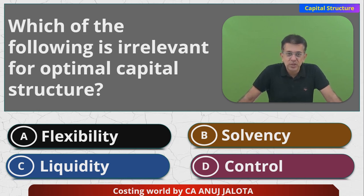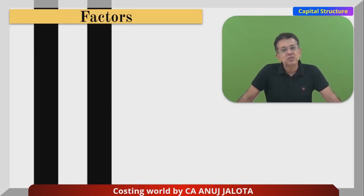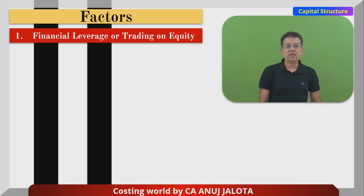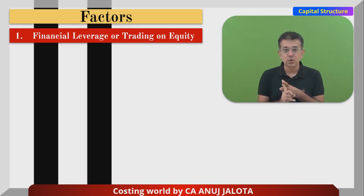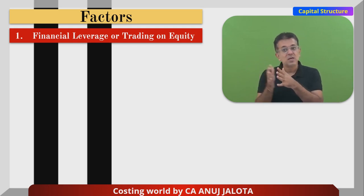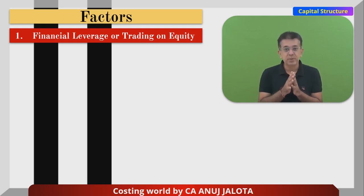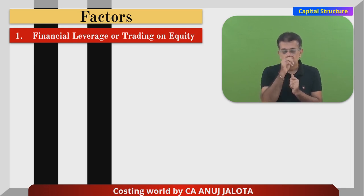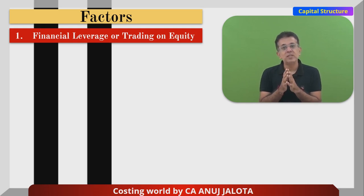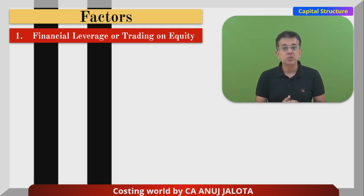These are the factors that should be considered. First: financial leverage or trading on equity. If your business is doing good, your sales are good, customers are happy, and the business is stable, then we always prefer more debt because debt brings risk — but that risk will pay off and will have a stronger impact on your EPS. So companies always think about what should be the ideal mix of debt and equity.